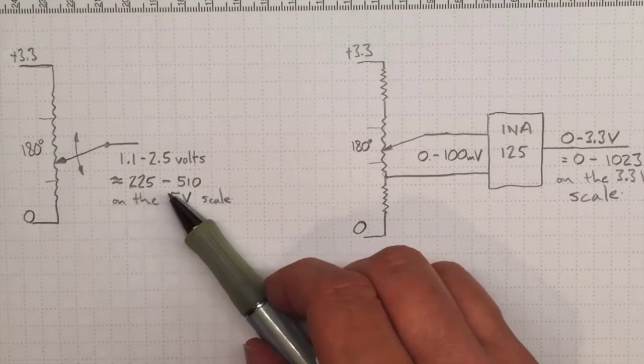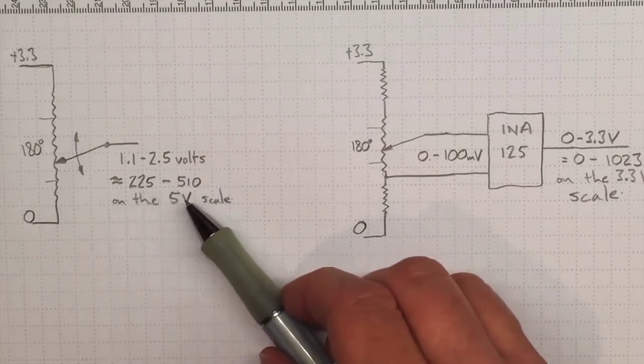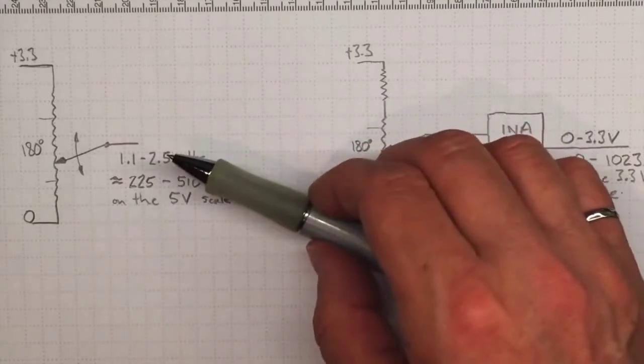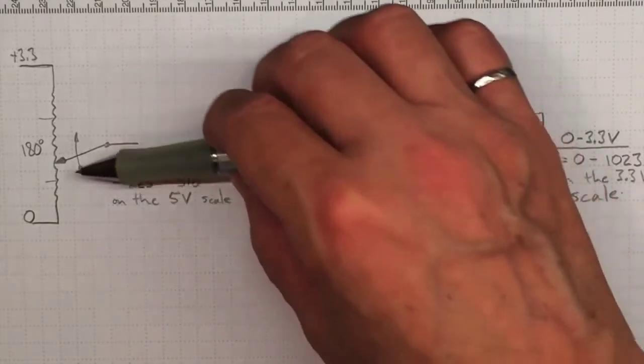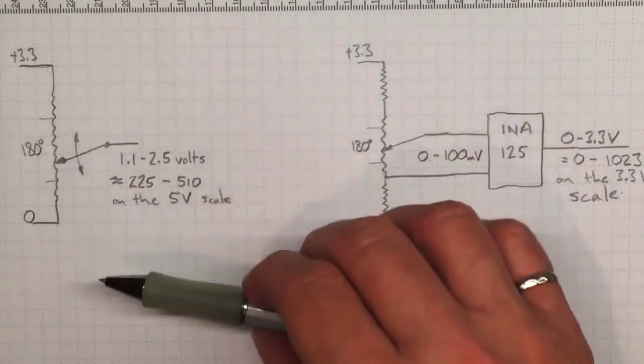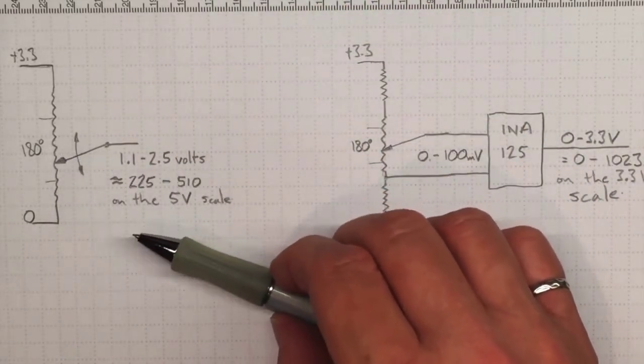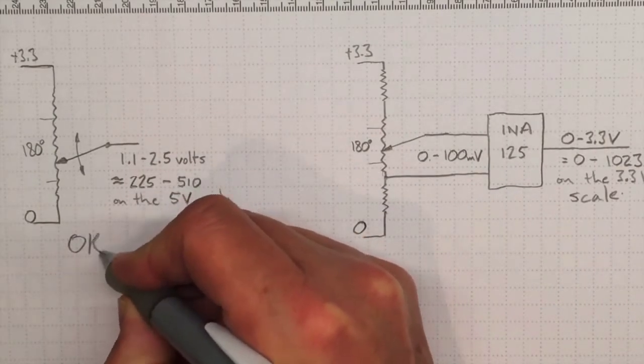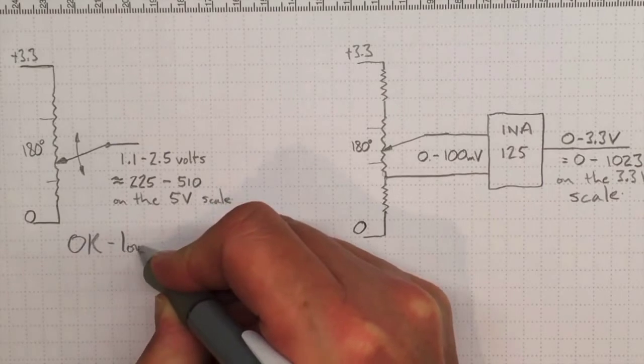So that's really only using about a quarter of the 1023 range of data values that I could get. So that's going about one division per degree. That's not as high resolution as I could get. So okay, but it's low resolution.